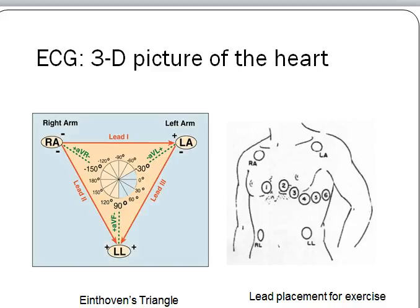So Einthoven developed his triangle, said we're going to pass these electrodes from your right arm to your left arm, and then from your left leg to your right arm. And then, so if you look at the positive and the negative,